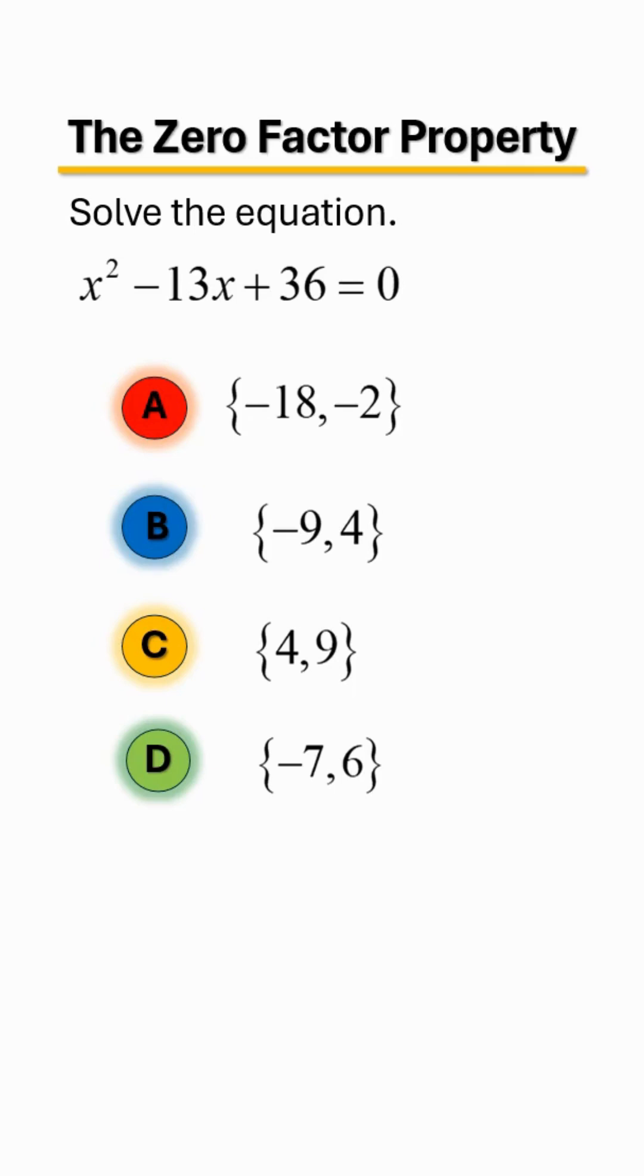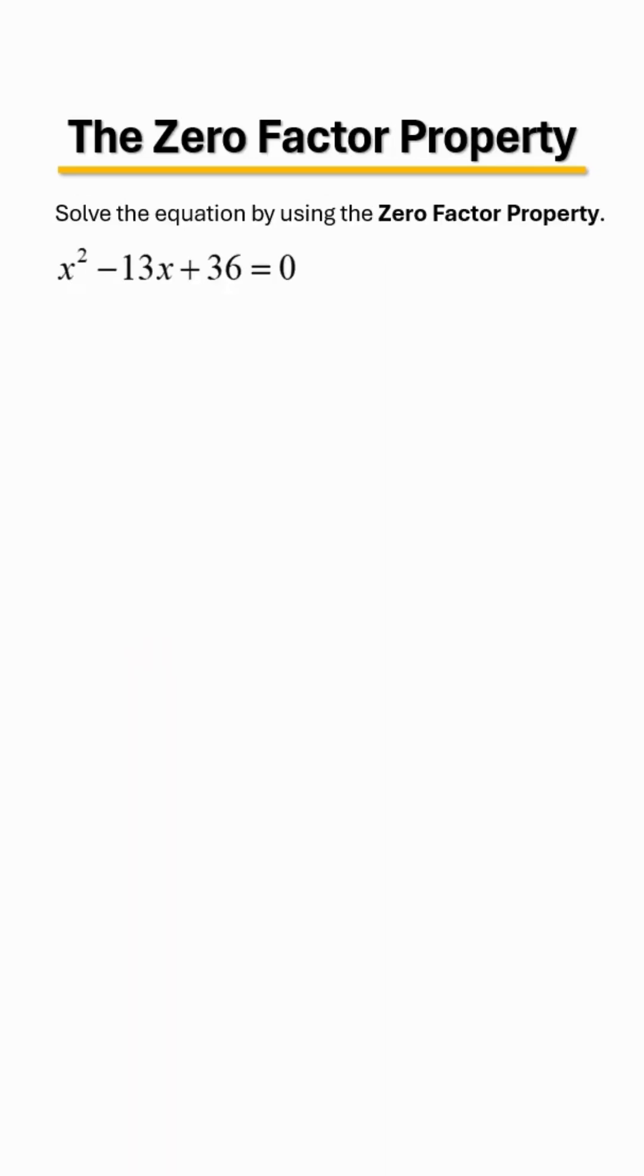To solve this equation using the zero factor property, step one you want to look at the back end term. If it's positive, that means the signs are going to be the same. The middle term will tell you what type of signs, so that's two negative. Now that we've discovered that, the next thing we're going to do...